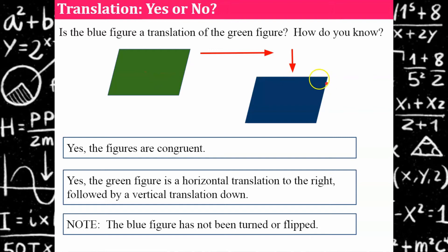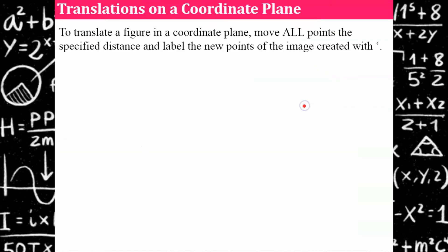Just to review some vocabulary — this blue is our image. Now let's talk about translating in the coordinate plane. In order to translate a figure in the coordinate plane, you need to move all points the specified distance and label the new points with the apostrophe called prime.